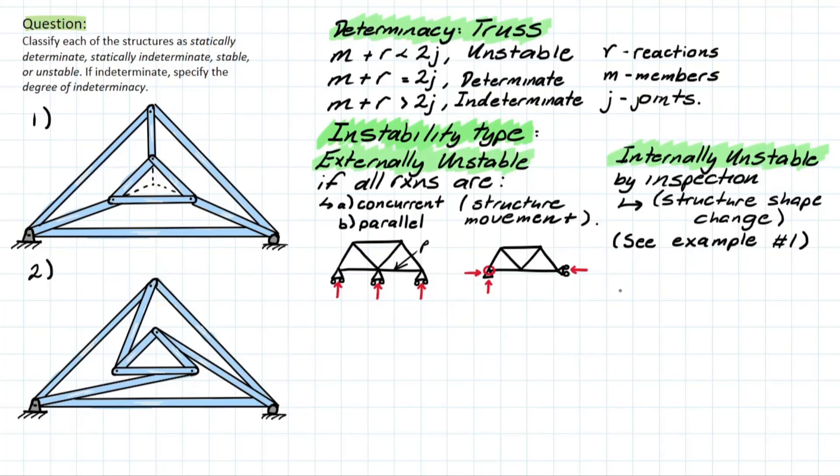The tricky part about these structures is that there could also be internal instability, which most textbooks will tell you is determined through inspection. There are some tricks we can use to identify it quickly. But generally, you have to look at the structure's shape changing. It doesn't necessarily mean the entire structure is going to translate as in the external case. Even just small elements within the structure could be responsible for internal instability, which is why I referred to the first part of this example.